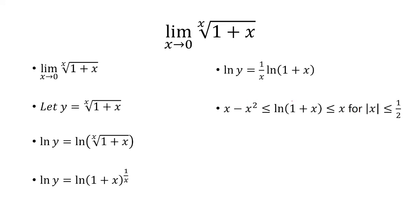now I want to use an upper and lower bound for ln of 1 plus x. So I just want to explain why this inequality works roughly. So here we're looking at x approaching 0. So at x equals 0, this is 0, this is 0, and this is 0.